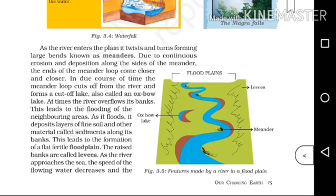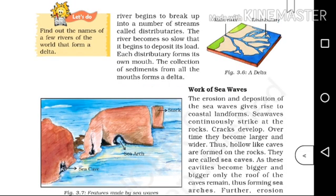As the river approaches the sea, the speed of the flowing water decreases. The river begins to break up into a number of smaller streams called distributaries.